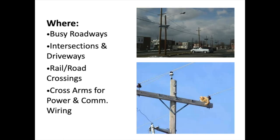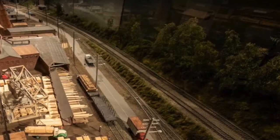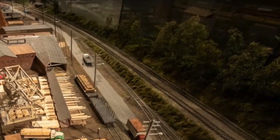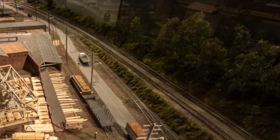Typically located at busy roadways, intersections and driveways, rail and road crossings. And of course, not only do they have lights on them, but they have cross arms that support power and communications wiring and the occasional cat. So this is a picture near the historical facility there at the history museum layout where we have some of these telltales.